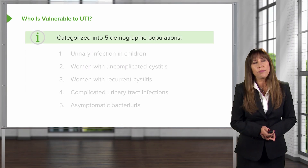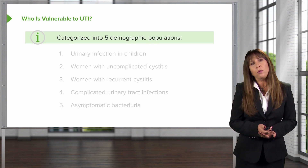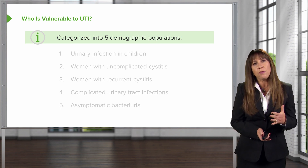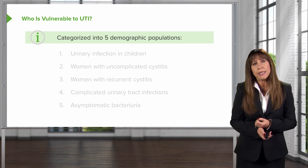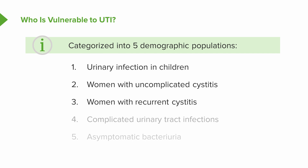When we think about who's vulnerable to UTIs, there are five different demographic populations to consider: first, urinary tract infection in children; second, women with uncomplicated cystitis; third, women with recurrent cystitis; fourth, complicated urinary tract infections; and finally, asymptomatic bacteriuria.